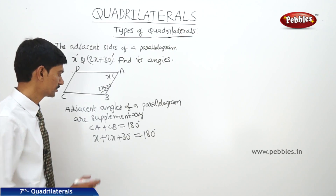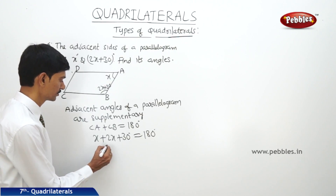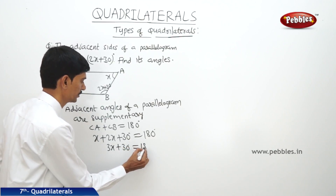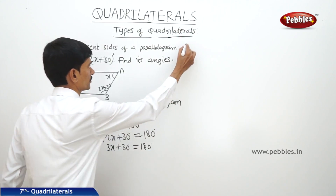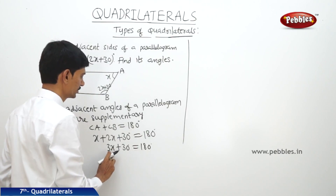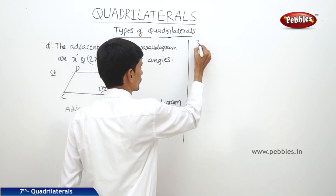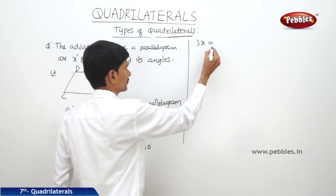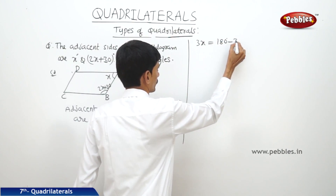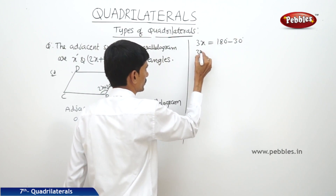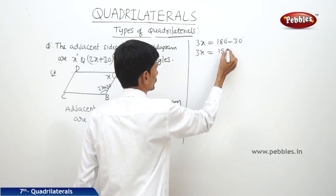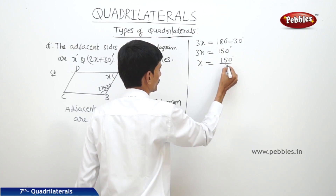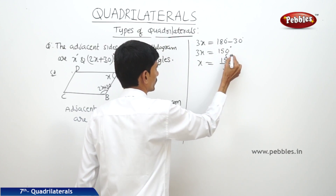x plus 2x plus 30 degrees equals 180 degrees. Then 3x equals 180 minus 30, so 3x equals 150 degrees. Then x equals 150 degrees divided by 3.